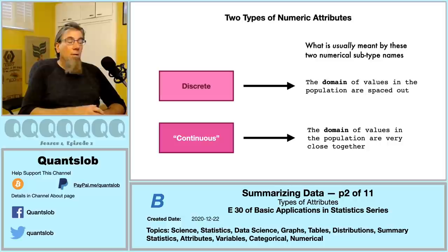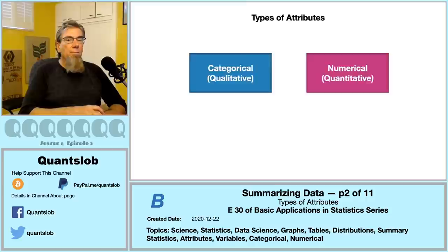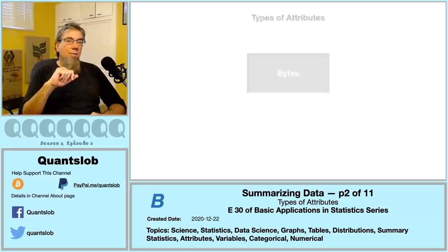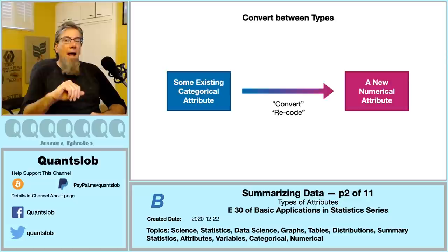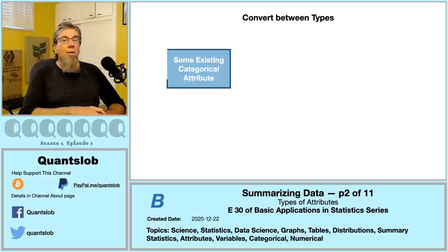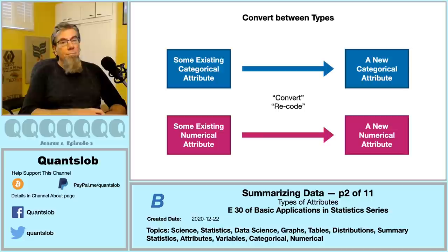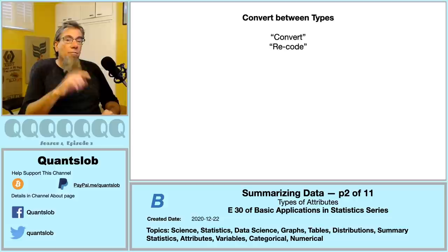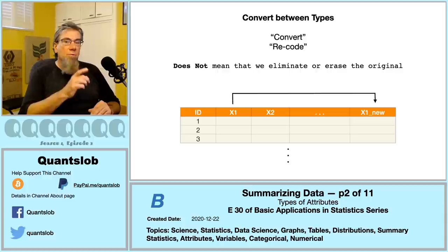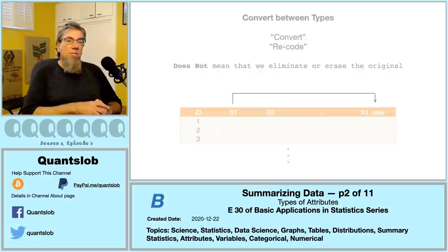Before looking at examples, there are some important things to keep in mind. From a computational standpoint, it could be said that there is really only one type of attribute. More practically, we can always convert or recode a categorical attribute into a numerical attribute, and vice versa. We can convert a categorical attribute into another categorical attribute, and even convert a numerical attribute into another numerical attribute. In practice, we never overwrite the original attribute — we simply create a new one.